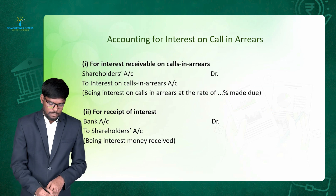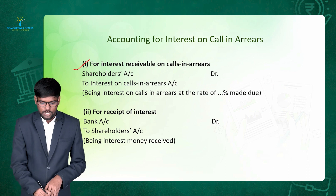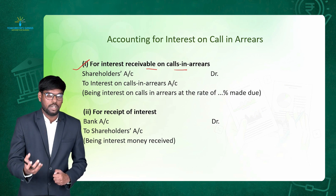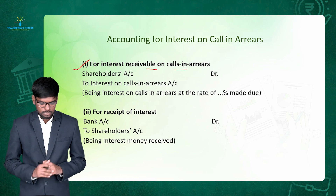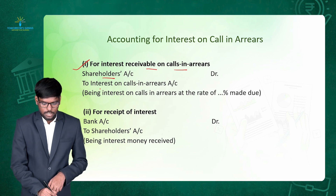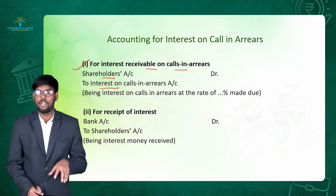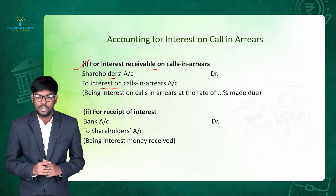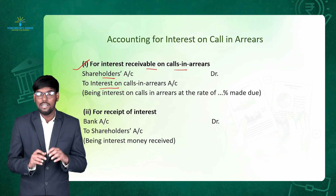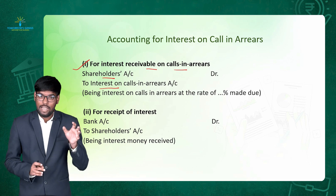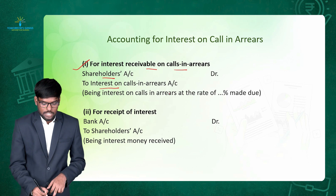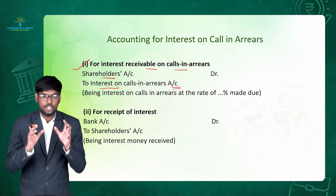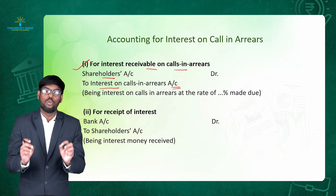First of all, we have to pass the journal entry for interest receivable on call in arrears — to record that we are going to receive interest on call in arrears. The entry will be: Shareholders Account debit to Interest on Call in Arrears Account. We debit shareholders because they are debtors for us now, since we are supposed to collect the interest amount from them along with the call in arrears amount. We credit interest on call in arrears account because it is income for us, and we always credit income.